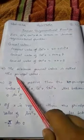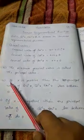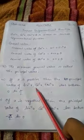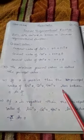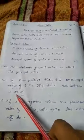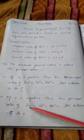Note: The minimum general value is called the principal value. If x is positive, then the principal value of sine inverse, cos inverse, tan inverse lies between 0 to π/2. If x is negative, then principal value of sine inverse, cos inverse, tan inverse lies between -π/2 to 0.